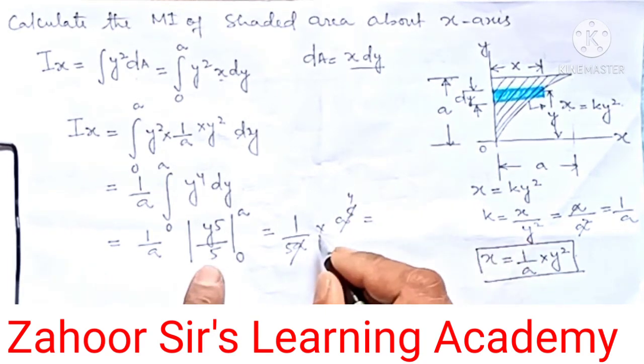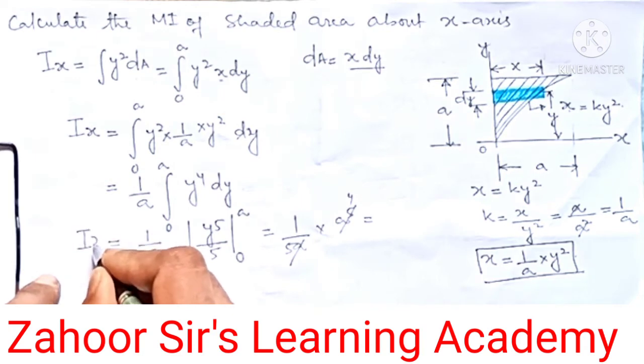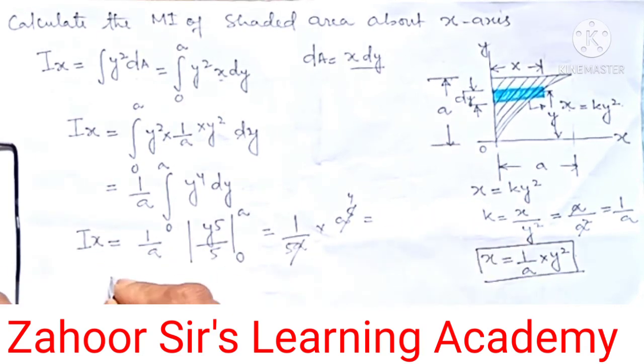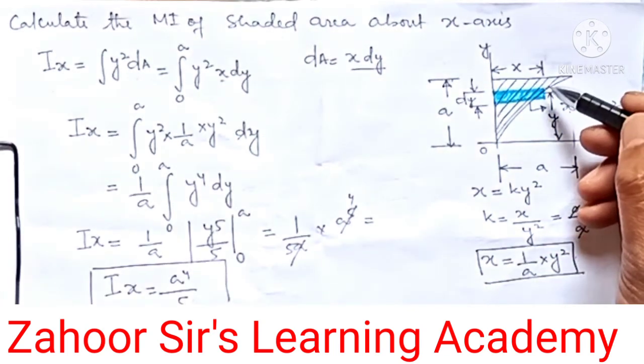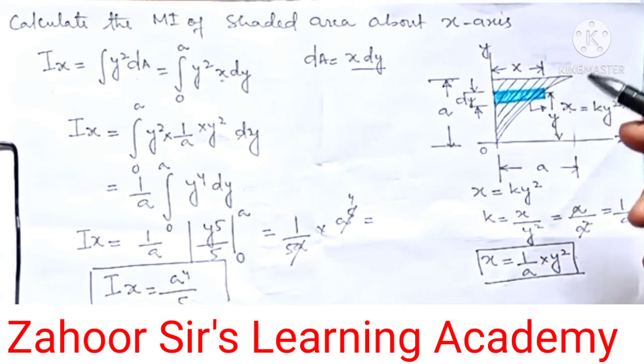So what is the moment of inertia about the x-axis? That is a⁴/5. This is the moment of inertia of this shaded region about the x-axis.